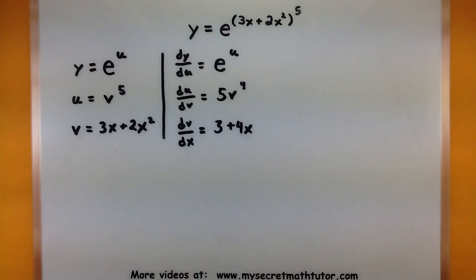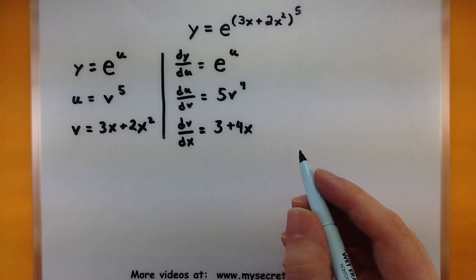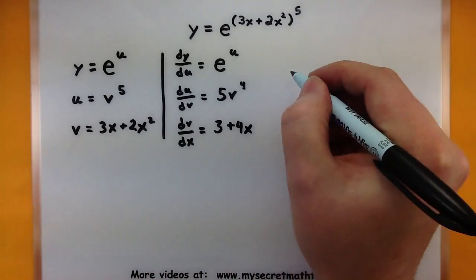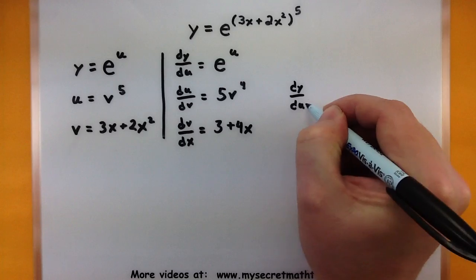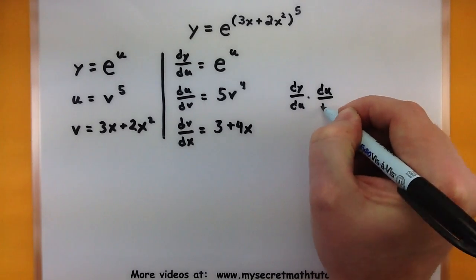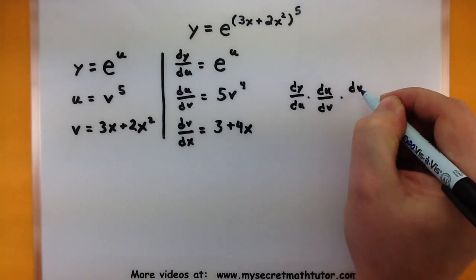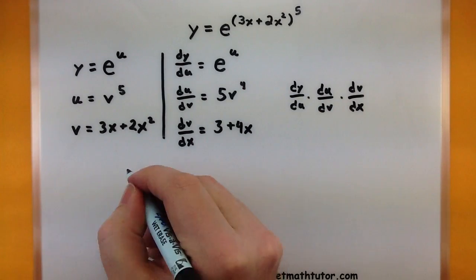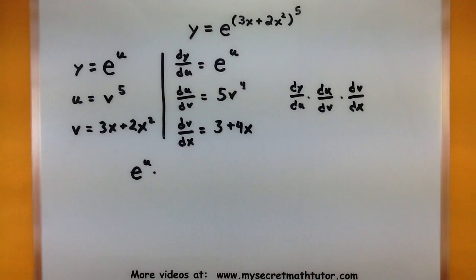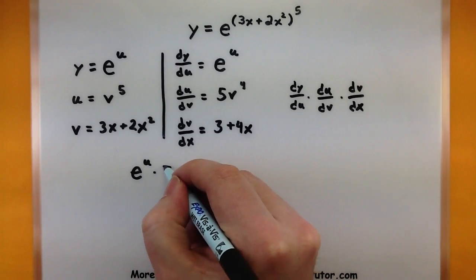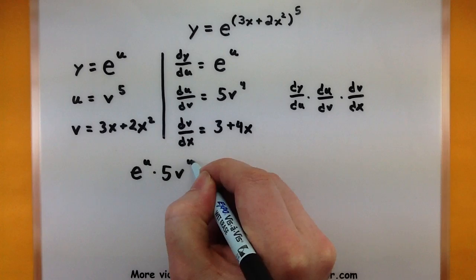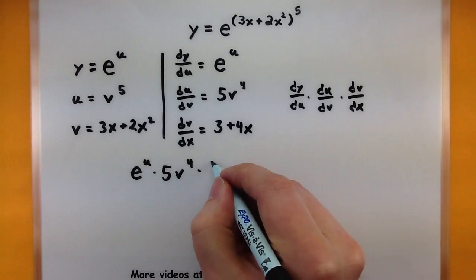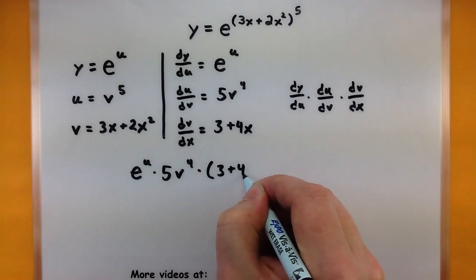Alright, so we've rewritten it, we have all of the derivatives. Now we simply want to take each of these pieces and multiply them together. Let's see what we got for this one. So I want to take dy du, multiply with du dv, multiplied with dv dx. Okay, starting with the first one. What is dy du? Well, it's e to the u, multiplied by the next one, 5v to the fourth. The next one, 3 plus 4x.